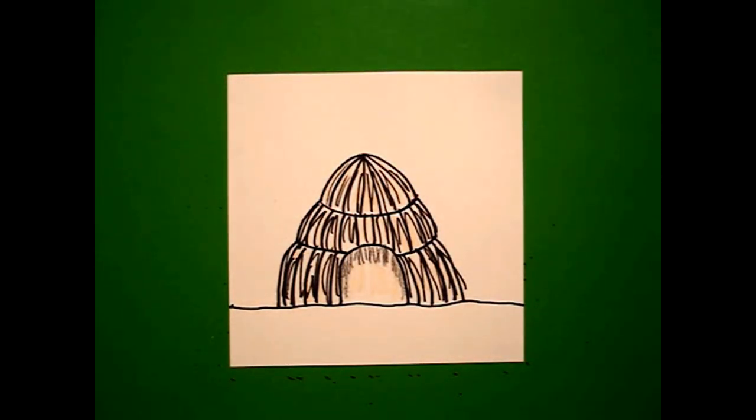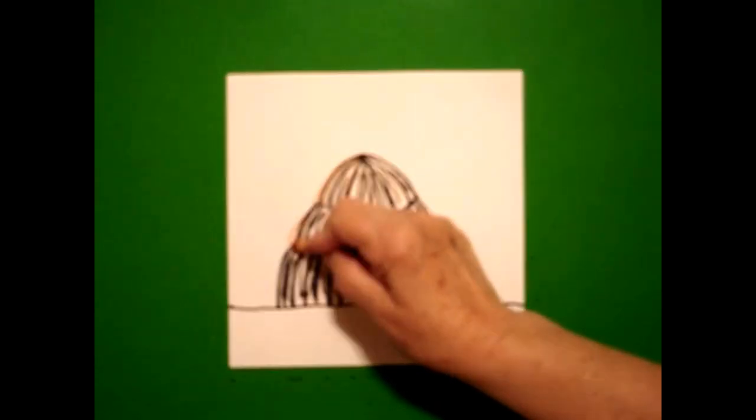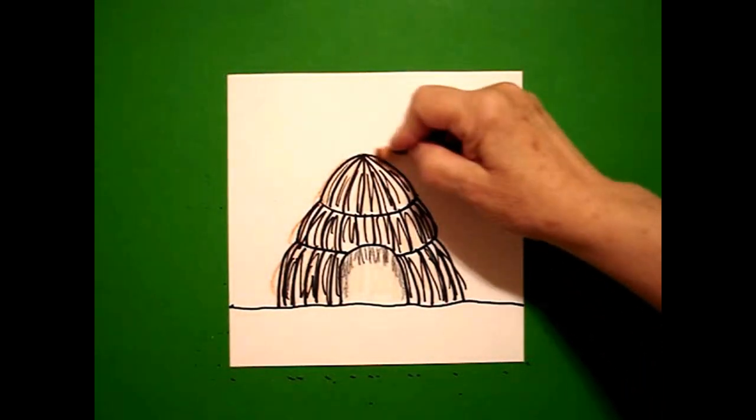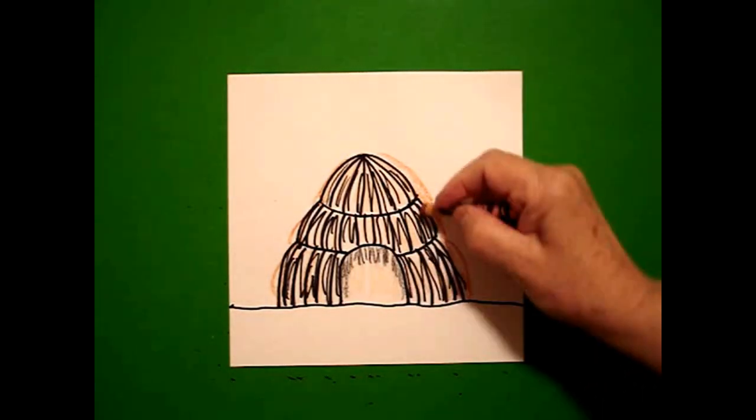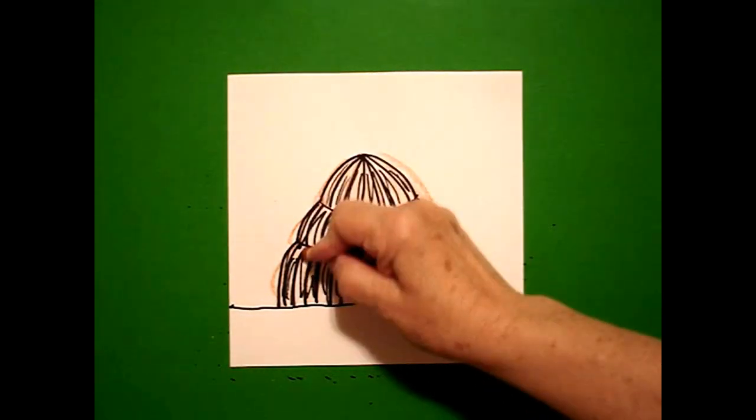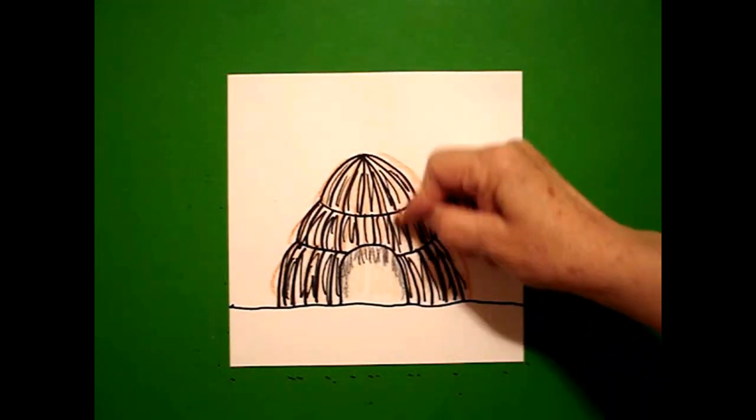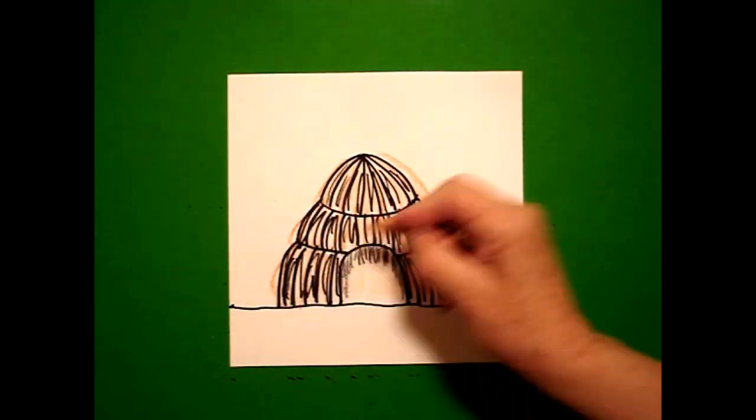Next color is tan and on this one I'm going to go a little bit outside of the lines on the outside because the reeds that they use, the tule rushes, were not solid. They were woven like mats.